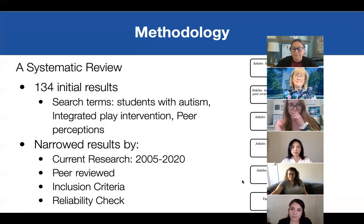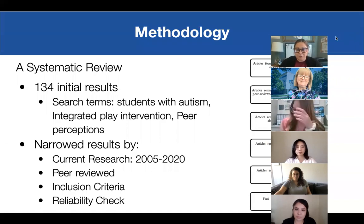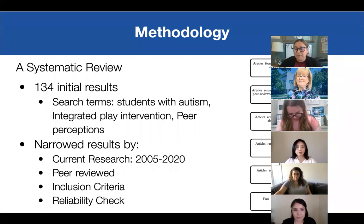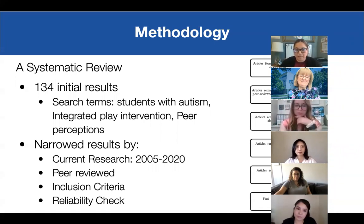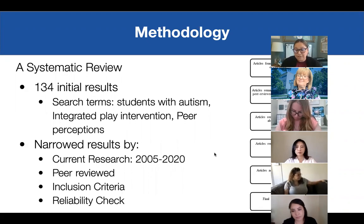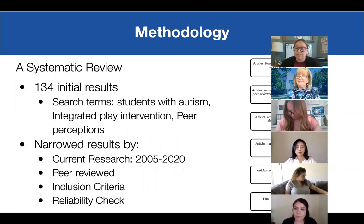For methods: the systematic review initially yielded over a thousand articles when search terms — students with autism, integrated play interventions, and peer perceptions — were entered. Using a secondary search, I narrowed it down to 134 results. I then looked for current research between 2005 and 2020 using peer-reviewed articles and inclusion criteria. After reviewing titles, abstracts, and conducting a full-text review, that narrowed my search down to five articles. A reliability check with Dr. Simpson brought it from six back down to five articles.